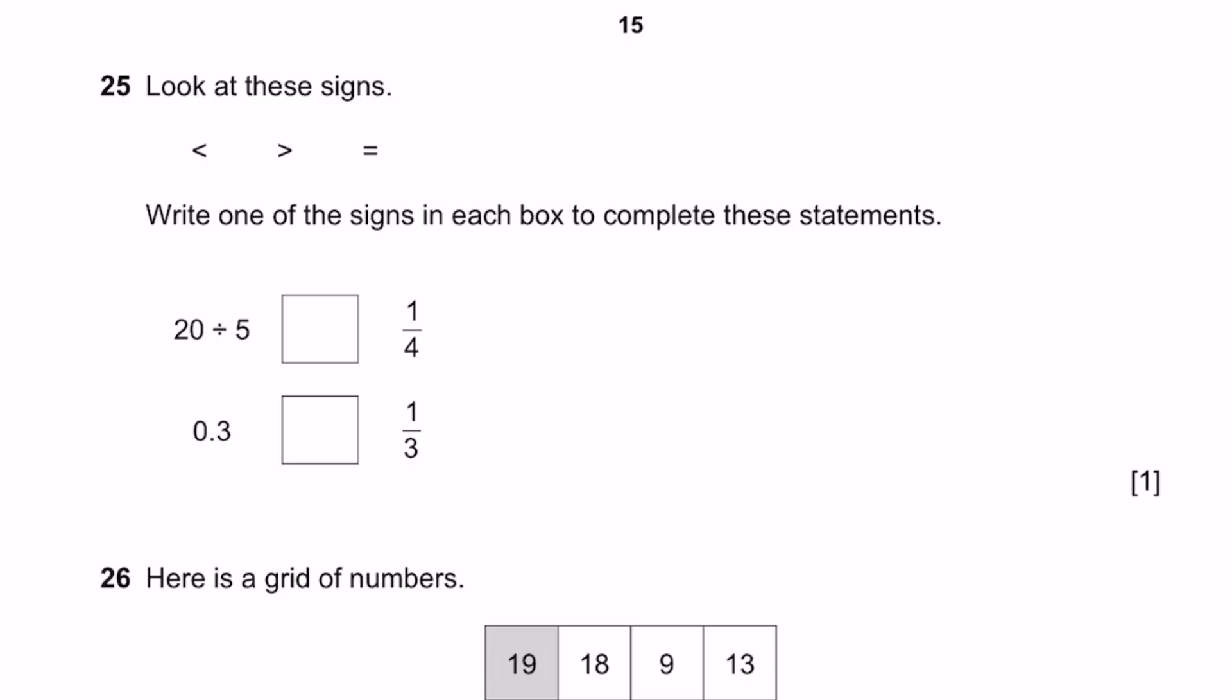Question 25. Look at these signs. Write one of the signs in each box to complete these statements. 20 divided by 5, that's equal to 4, which is greater than 1 by 4. 0.3 is something 1 by 3. 1 by 3 is equal to 0.33333, which is greater than 0.3. So the less than symbol should be over here. 0.3 is less than 1 by 3.